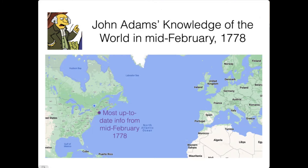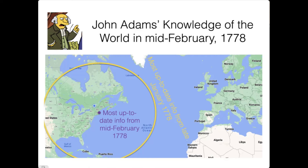So we can think about a map of John Adams's knowledge of the world in mid-February 1778, when he was about to set sail. Anything in his hometown of Boston was completely up to date—something happened down the street, he knows. But if he wanted to know about something in Northern Quebec, it takes a horseback rider some time through the wilderness to get to Boston, so the most up-to-date information he could possibly have from Northern Quebec would have been from late January 1778.